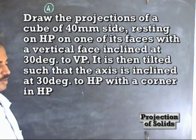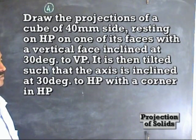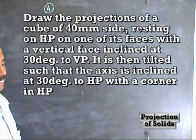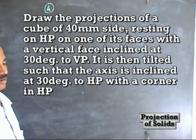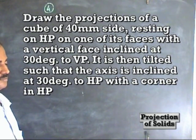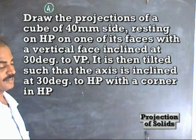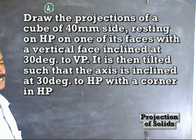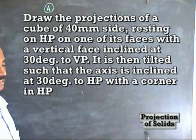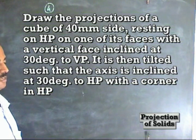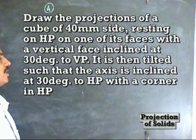Here we are going to draw the projection of a cube of 40 mm side on HP on one of its faces with the vertical faces inclined at 30 degrees to HP. It is then tilted such that the axis is inclined at 30 degrees to HP with a corner in HP.